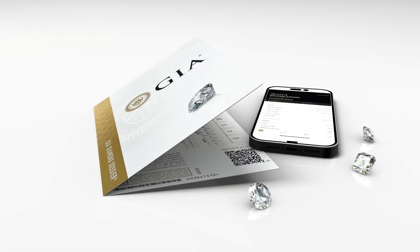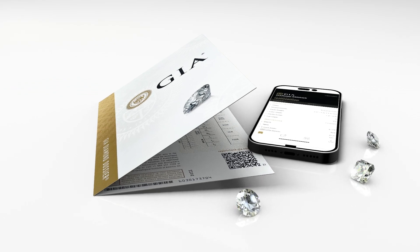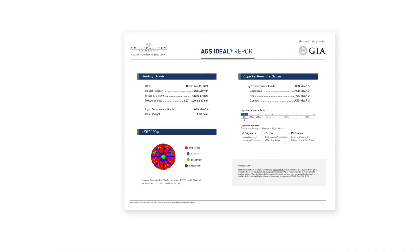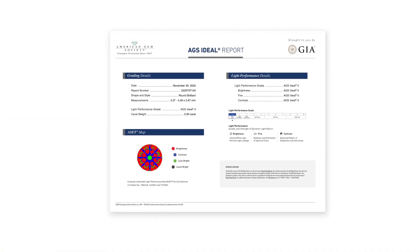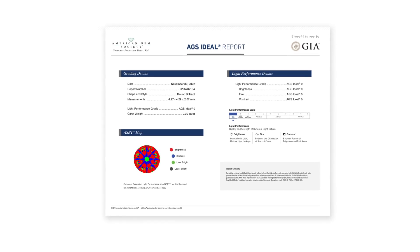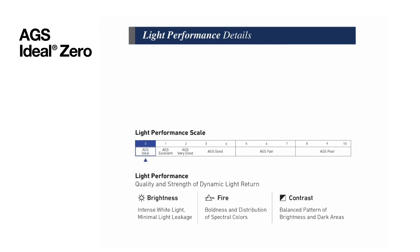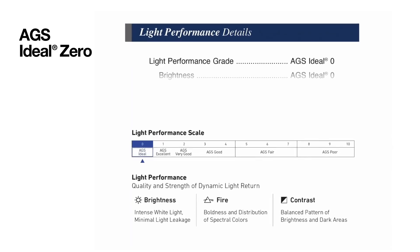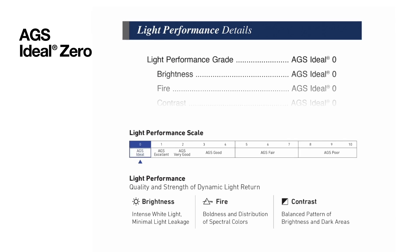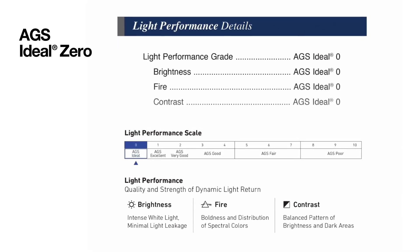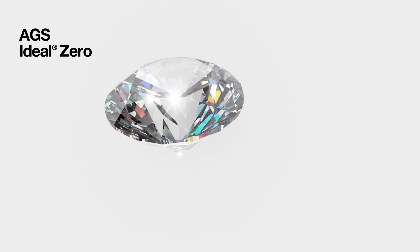While GIA grading reports provide information on the diamond's 4Cs, the AGS Ideal Report provides additional context to premium diamonds. AGS Ideal 0 is the grade given to diamonds that meet the highest standard of each measurement of light performance.